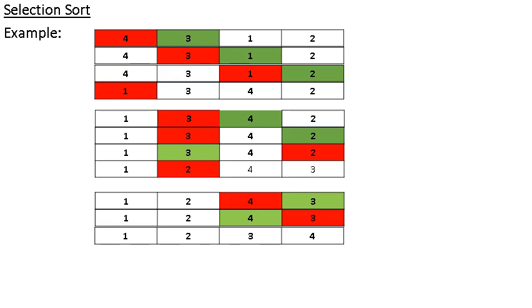Next, we will see the selection sort algorithm. Selection sort also sorts the array elements in ascending order. Here we scan the entire array from left to right, comparing adjacent elements and sorting in ascending order. In bubble sort, at the end of each scan, the largest element bubbles out and is positioned at the last position of the array. That's why it's called bubble sort.